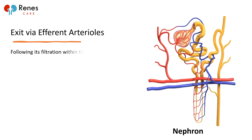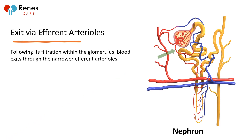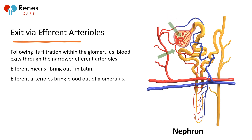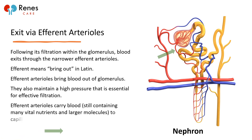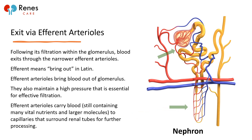Following its filtration within the glomerulus, blood exits through the narrower efferent arterioles. Efferent means 'bring out' in Latin. Efferent arterioles bring blood out of the glomerulus and also maintain the high pressure that is essential for effective filtration. They carry blood — still containing many vital nutrients and larger molecules — to the capillaries that surround the renal tubules for further processing.